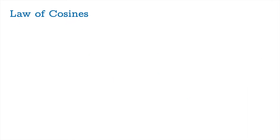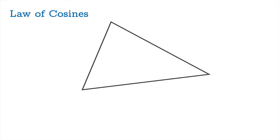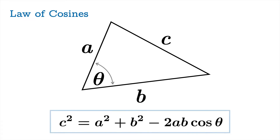Here's a statement of the law of cosines. You have a triangle with sides a, b, and c, and let's label the angle between the sides labeled a and b — we're going to call that theta. The law of cosines asserts that c squared is equal to a squared plus b squared minus 2ab cosine theta.